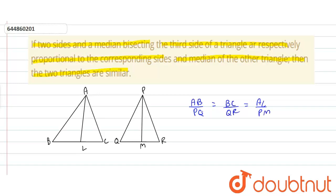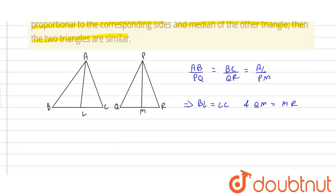As we know that a median bisects a side into two equal parts, therefore BL is equal to LC and QM is equal to MR, or we can write BC is equal to 2BL and QR is equal to 2QM.